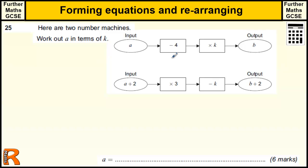The question says we've got two machines - work out a in terms of k. Let's see what's going on here. We've got input a taken away 4, so a minus 4, and we're times-ing by k. So that's going to be times by k. Now I don't really know what I'm doing here, I'm just going through what the function machine is telling us.